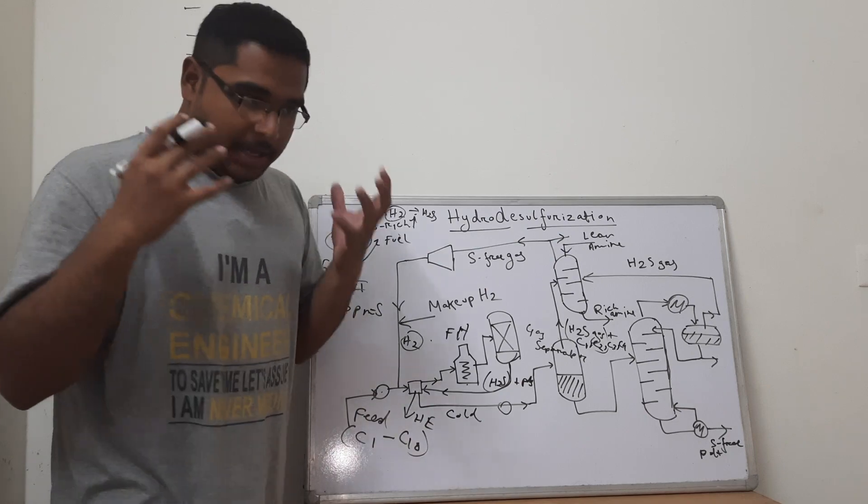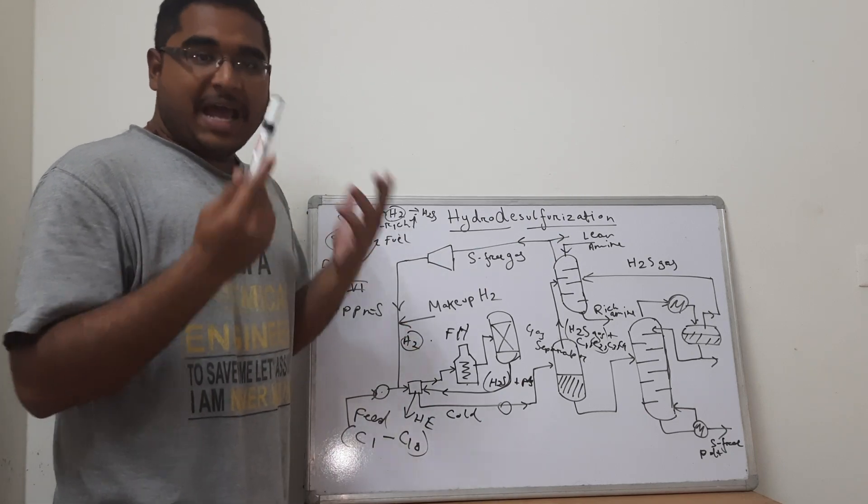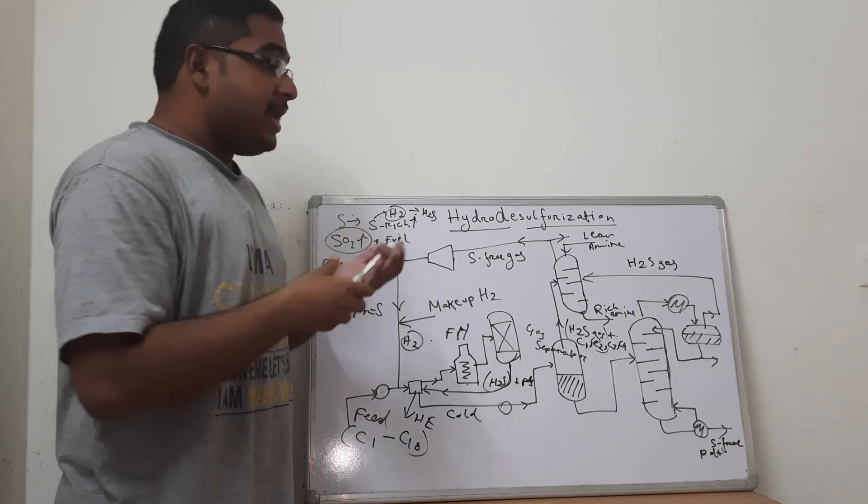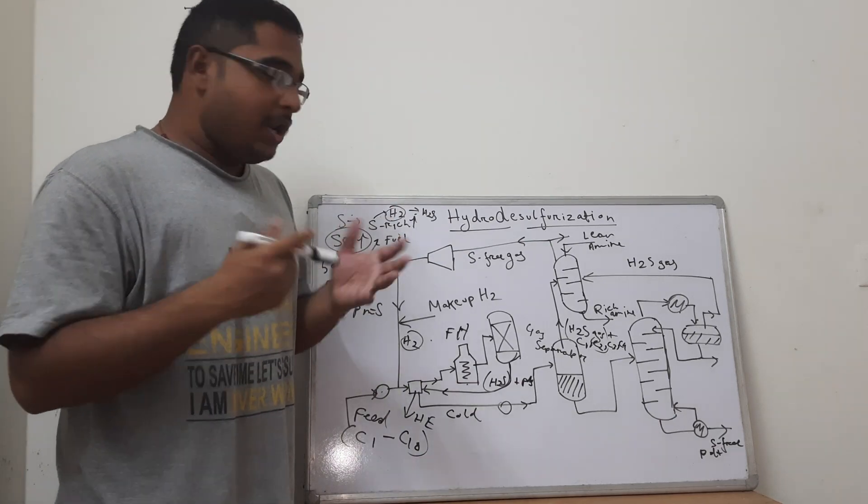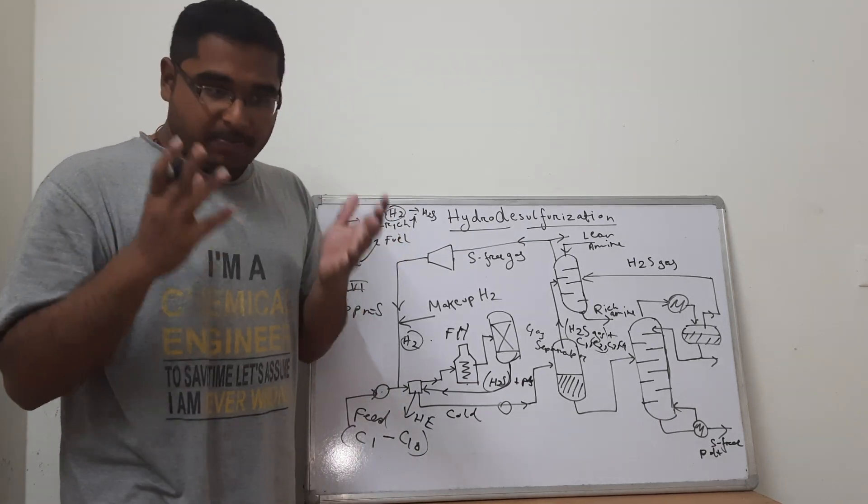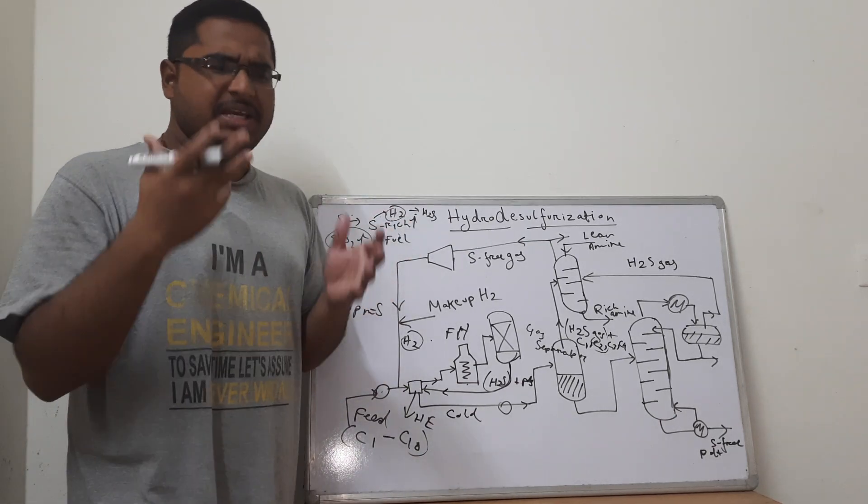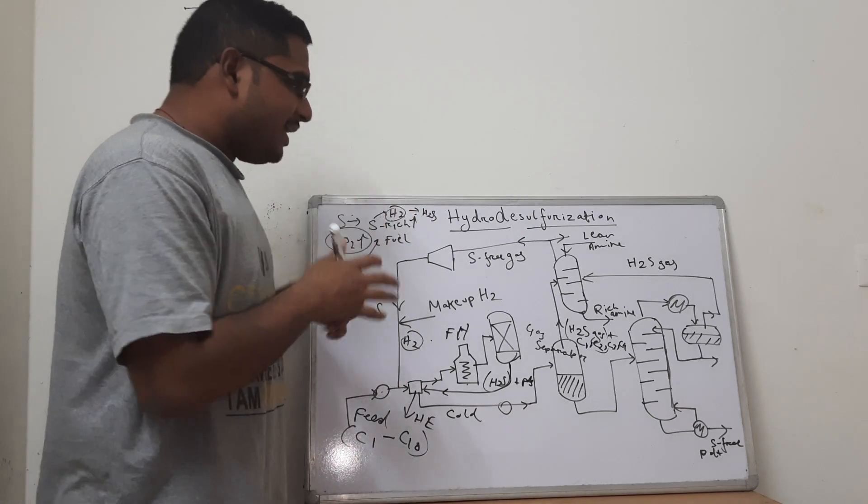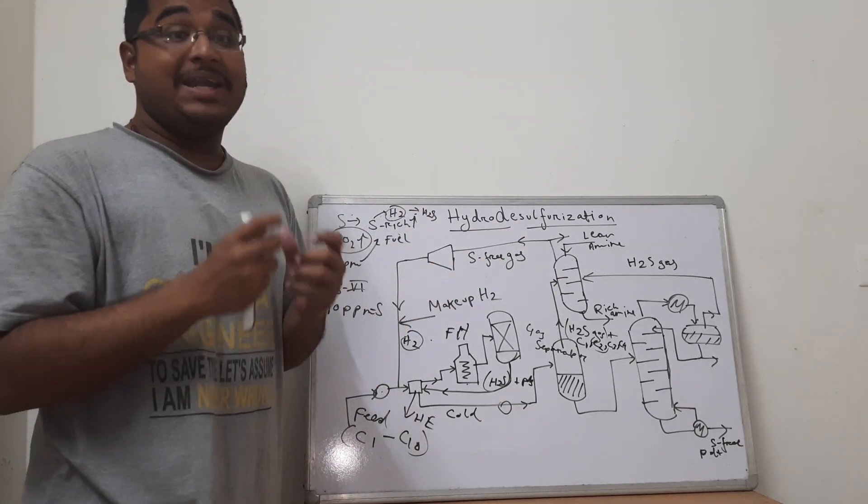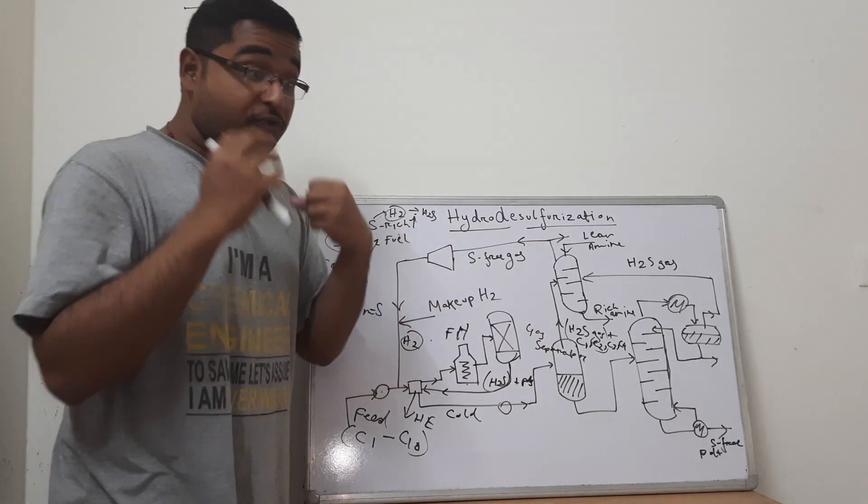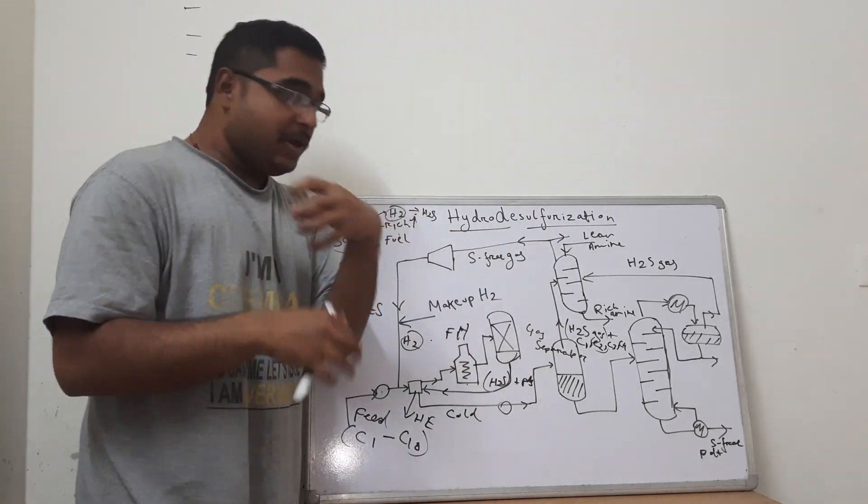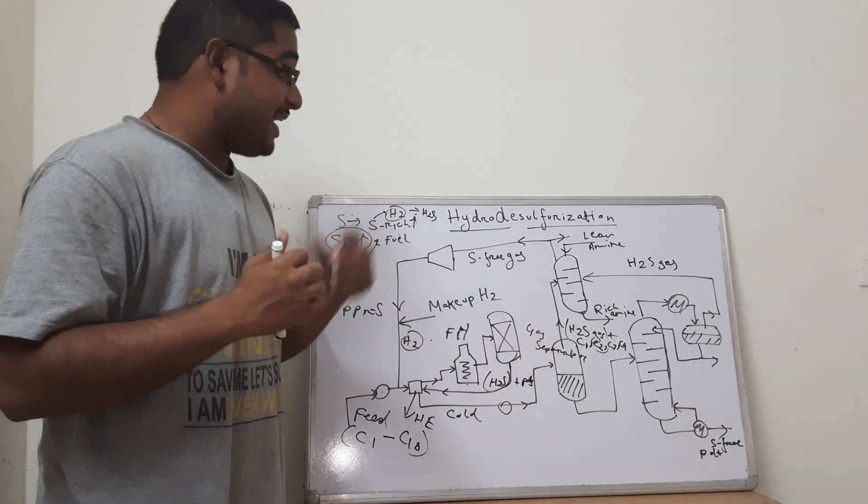Now amines may be primarily MEA that is methyl ethanol amine. It may be MDA, methyl diethanol amine. It may be PZDA, different kind of piperazine, PZ. Different blended amines are also being used in the industry depending on their characteristics to absorb the required gas. Here our required gas that needs to be absorbed is H2S.